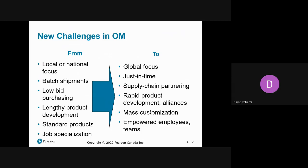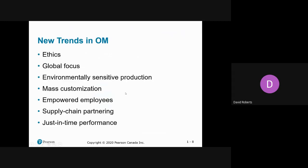Mass customization — Dell Computers was one of the first companies to really get this right. When you order a computer from Dell, you don't just get their standard product. You can select your video card, the type of hard drive, the type of RAM, and build it to what you want, and they get it to you quickly without charging you 20 or 40% more.